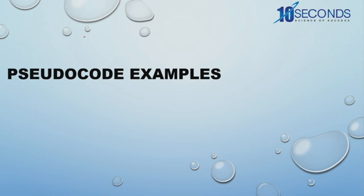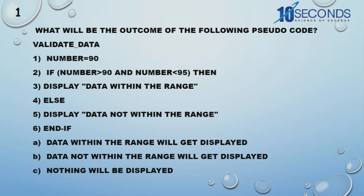In this particular video, I discuss a few pseudocode examples. So the first pseudocode — what will be the outcome of the following pseudocode? The variable number is assigned the value 90.